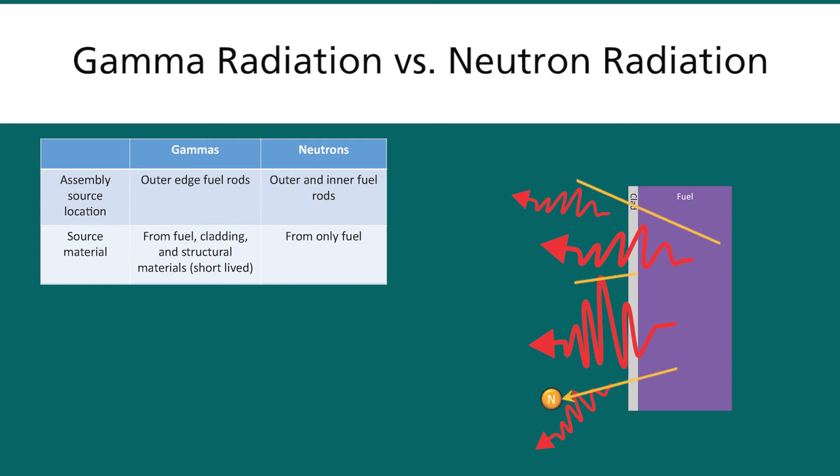The neutrons are coming only from the fuel. So these two factors, the assembly source location and source material of the radiation, provide several advantages and disadvantages we will take a look at.